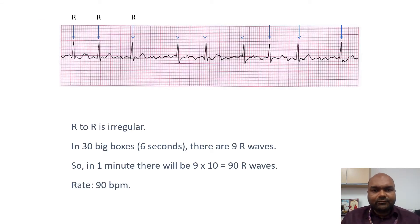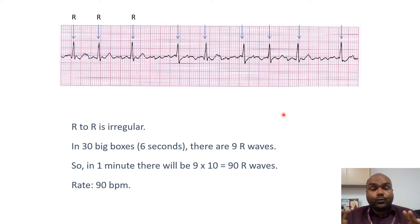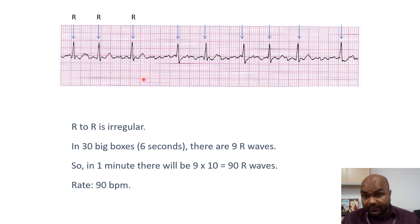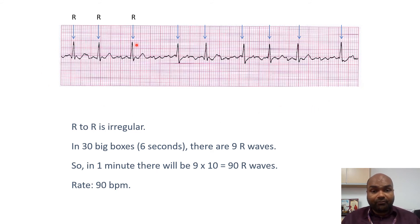If the R-R interval is irregular, as in this ECG, how do we calculate the rate? Very simple. One big box is 0.2 seconds and five big boxes is one second. In this strip, we choose 30 big boxes, which corresponds with 6 seconds. This whole strip here — 30 big boxes — is 6 seconds. Then you calculate the number of R waves present in those 6 seconds of the ECG strip.